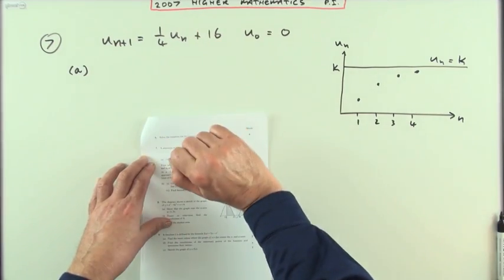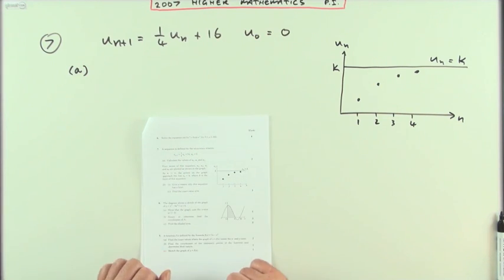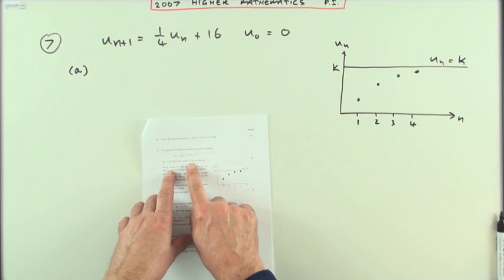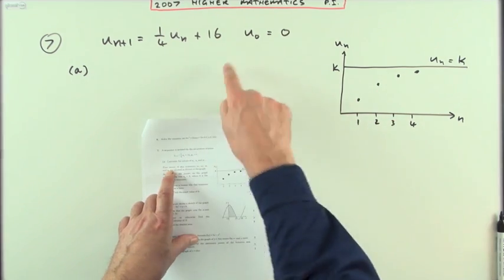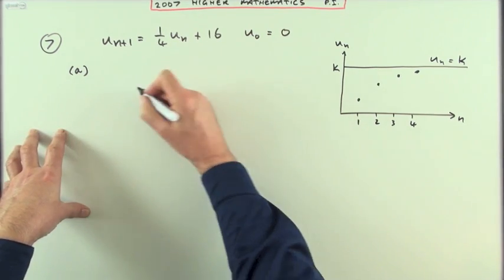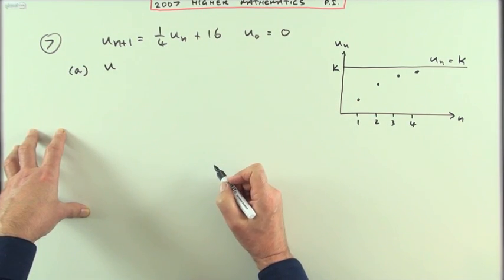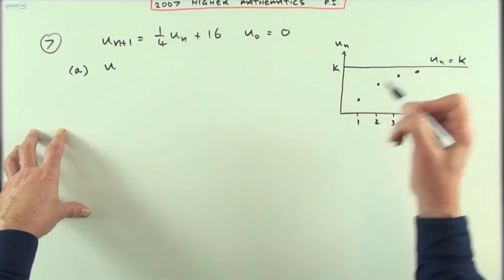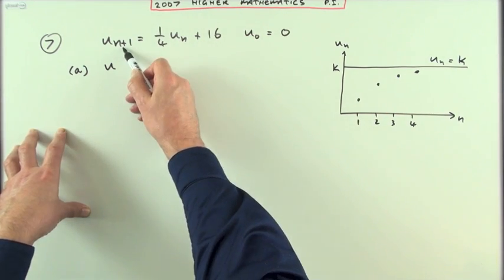Number 7 from the 2007 Higher Maths Paper 1, a recurrence relation. The first three marks are for finding the first three terms of this recurrence relation. That should be straightforward because there's the pattern for it. The recurrence relation doesn't give you the formula to take you to any point straight away. It only lets you work out the next one.